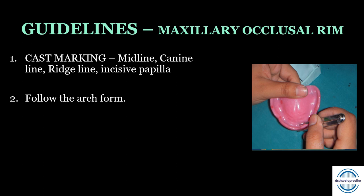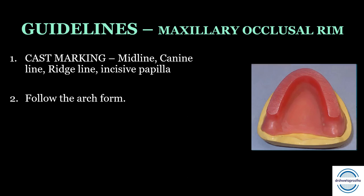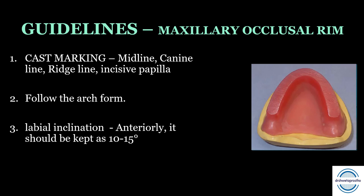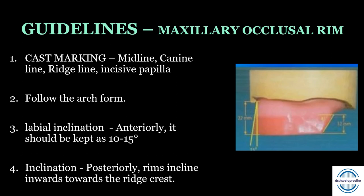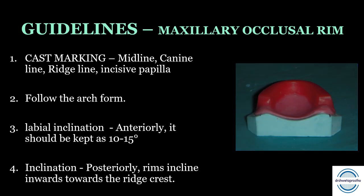After cast marking, the occlusal rims should follow the arch form — whether square, tapering, or ovoid. Anteriorly, the labial inclination should be arbitrarily kept at 10 to 15 degrees in the central incisor region, as seen in the picture, which can later be confirmed clinically depending on lip support. In the posterior region, the rims should incline inwards towards the ridge crest.